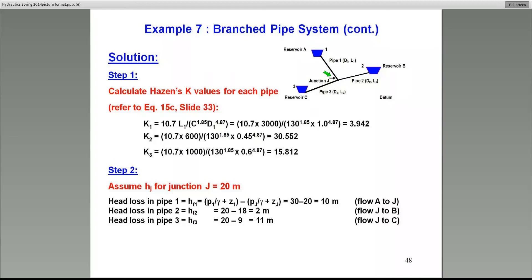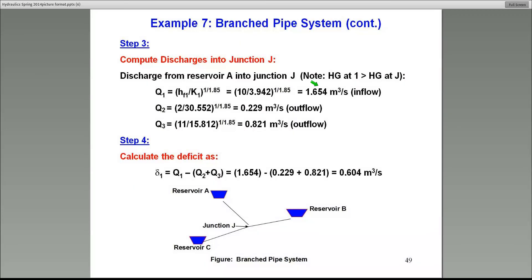Once you know the head loss, you can calculate the flow. Before I do that, I'll also do that for reservoir 2, pipe number 2 here, and pipe number 3 also. There are the values: 2 meters head loss for pipe number 2, and 11 meters for pipe number 3, which is flow from J to C, reservoir C. Once I get those head losses, I can calculate the flows.